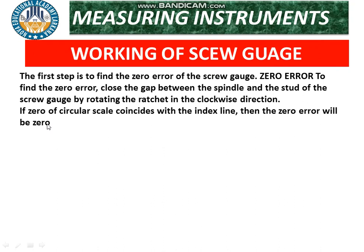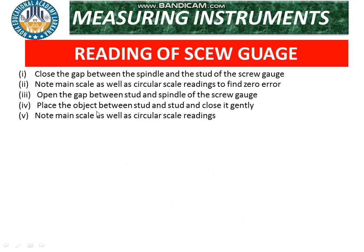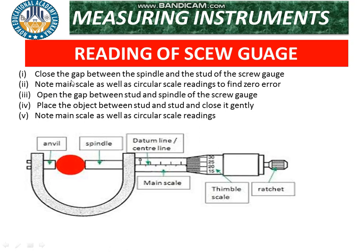To find the zero error of the screw gauge: close the gap between the spindle and the stud by rotating the thimble clockwise. If the zero of the circular scale coincides with the index line, the zero error is zero. If the zero lies to the right of the index line, it is a positive zero error. If the zero lies to the left, it is a negative zero error.